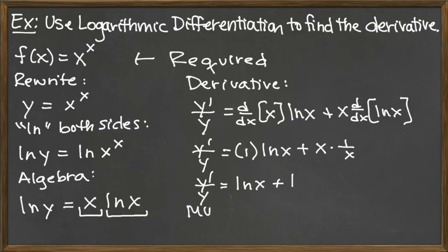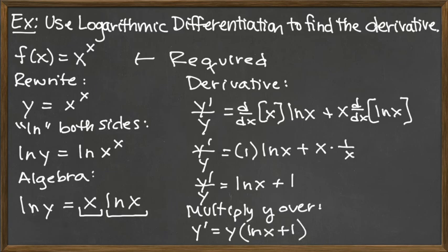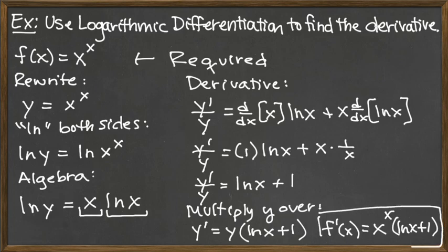When we multiply both sides by y, we have y' = y times parentheses, and you always want the parentheses there because in general there will be multiple terms on the other side separated by addition and subtraction. To finish up, we insert our functions. We've got f'(x) equals y, which was our f(x) = x^x, multiplied by ln(x) + 1 as our final answer. Thank you.